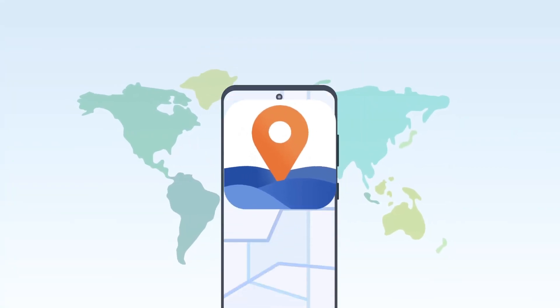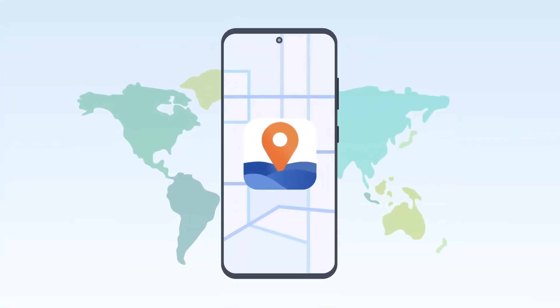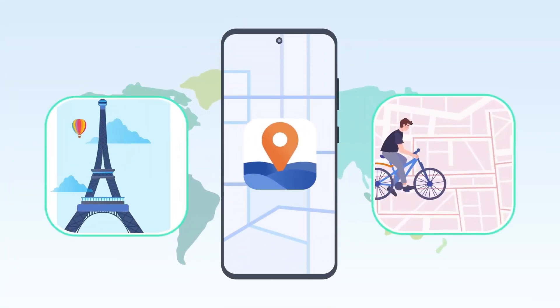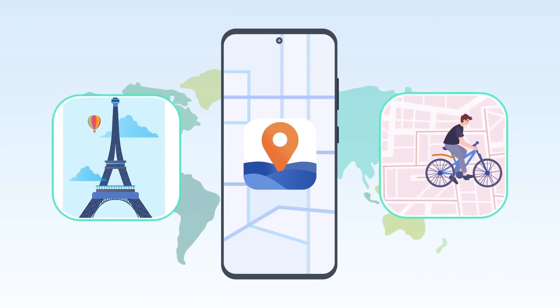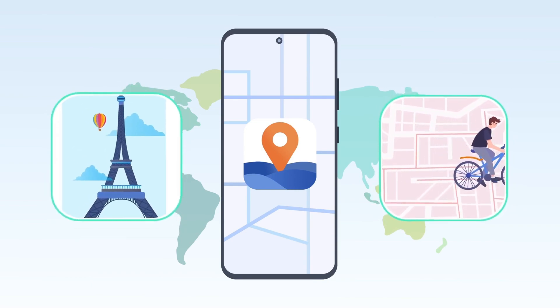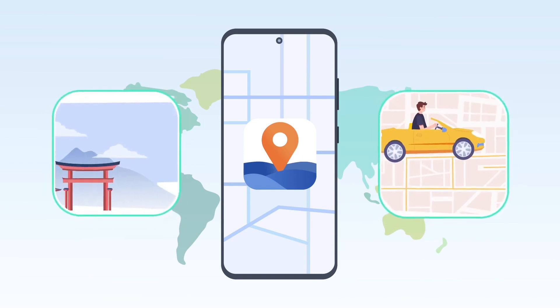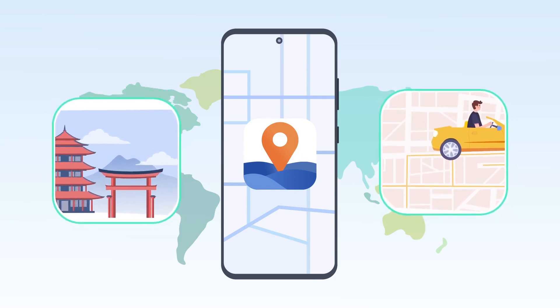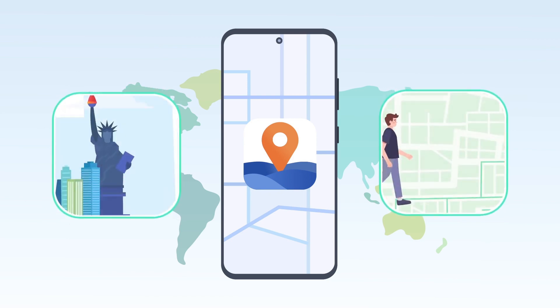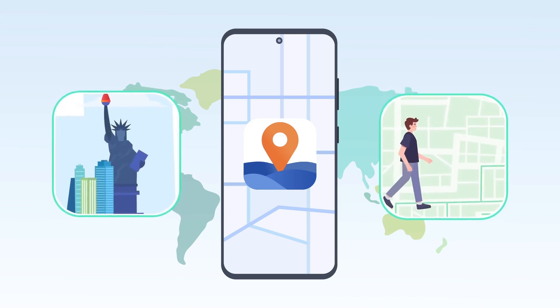Location Simulator — the Android version of iMyPhone Any2 app — has two main functions: modify locations and simulate real routes. First, I'll show you how to do it.